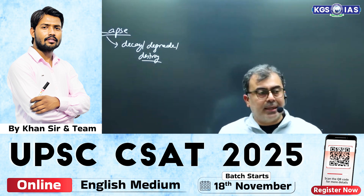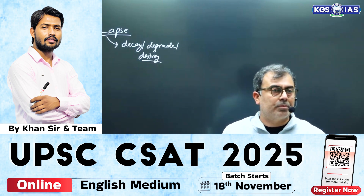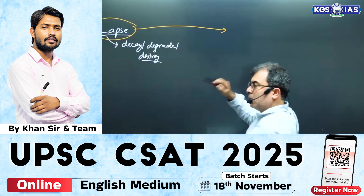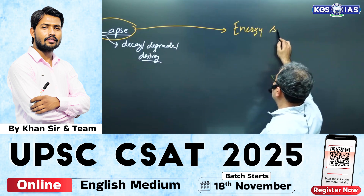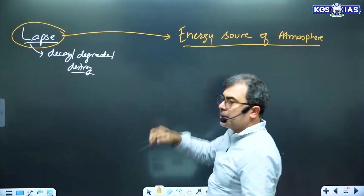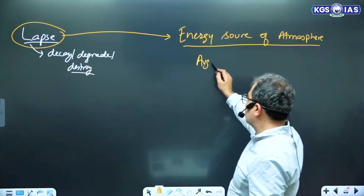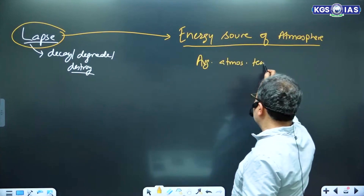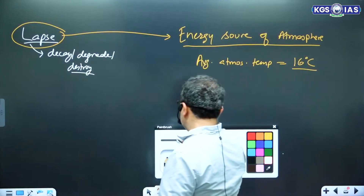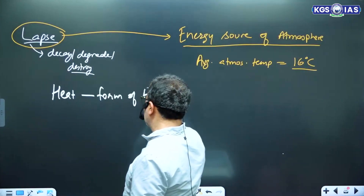Welcome everyone. Let us try and understand where does the energy of the atmosphere come from. I am dealing with lapse rate, and to understand this I need to study the energy source of the atmosphere. What is the average atmospheric temperature? Average atmospheric temperature is 16 degrees Celsius, and as you know from your school days, heat is a form of energy.